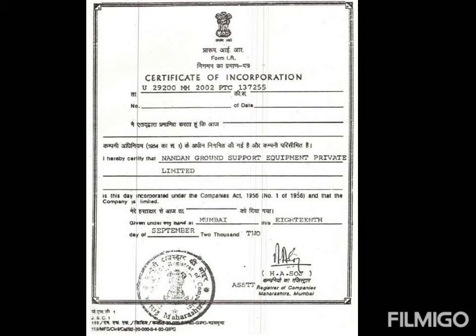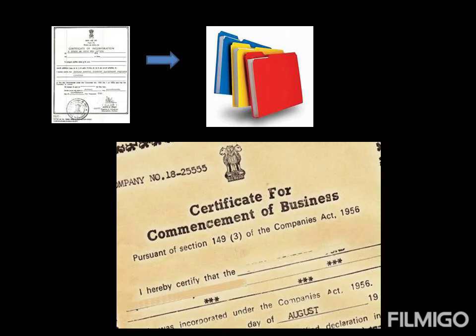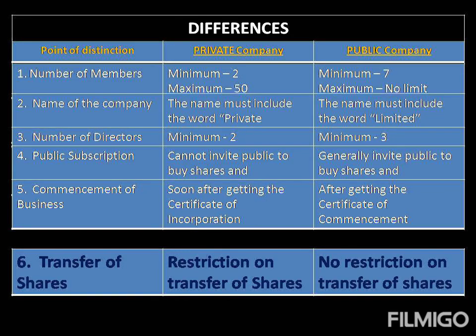Once this certificate is received by a private company, they can start their business. However, the public company can only start selling shares on receipt of this certificate. The public company, on receiving this document, starts its process of getting members, and then further documents have to be submitted, after which a certificate of commencement is issued, and only then can the company start its business.